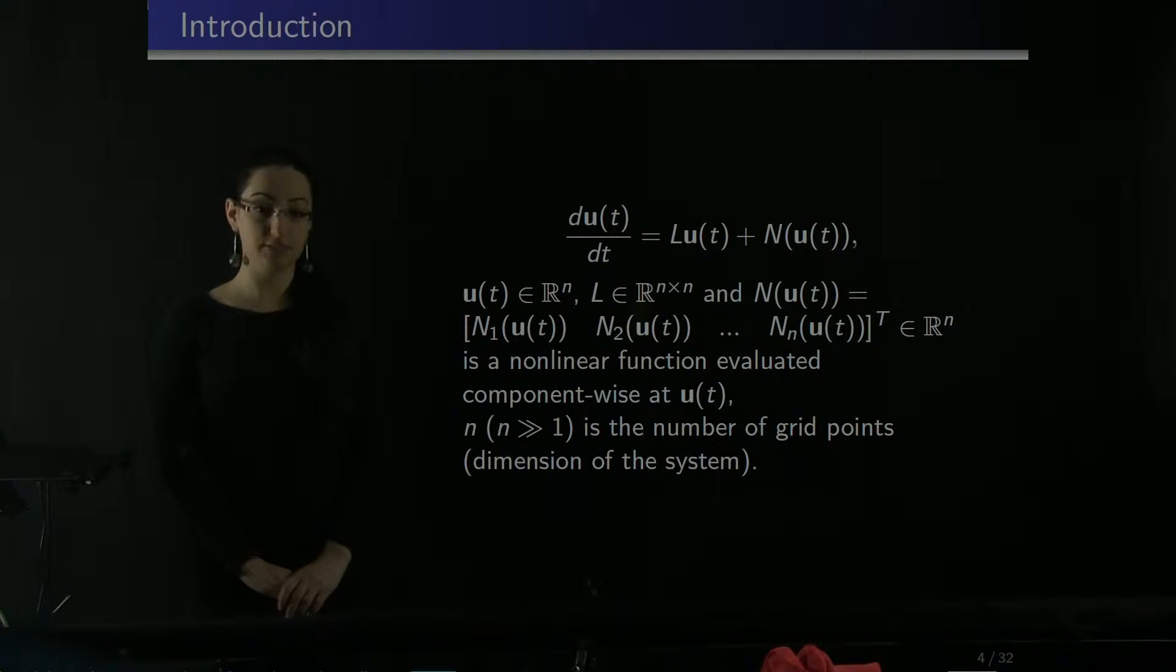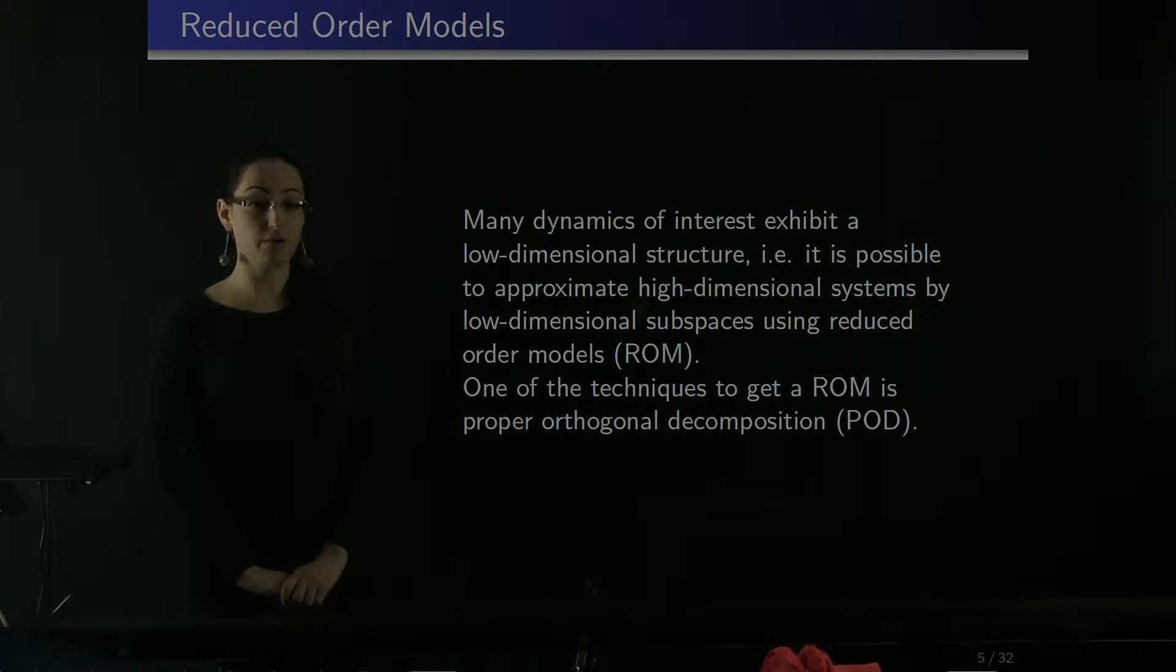Suppose we have a system of ordinary differential equations where L represents the linear part of the system and N is the nonlinear part. The dimensionality of the system is assumed to be large. However, fortunately, lots of dynamics of interest exhibit low dimensional structure, which means we can approximate that high dimensional system with a smaller dimensional system. One of the techniques to do this is called the proper orthogonal decomposition method.